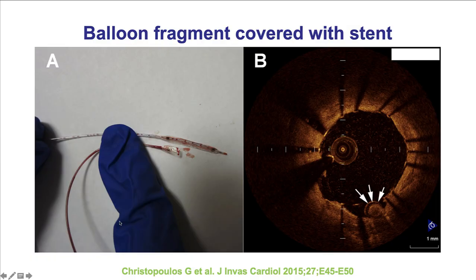If what fractured is a very small segment of balloon — for example, approximately 10–15 mm retained in the vessel — one can perform intravascular imaging. If the fragment is not protruding into the aorta or at a critical coronary location, one approach is to leave it in situ and cover it with a stent, which is what happened in this particular patient.